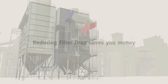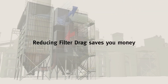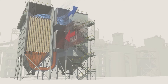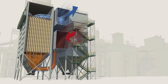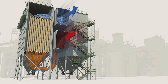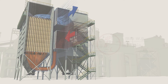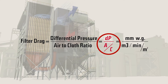Filter drag — reducing it saves you money. By definition, it is the total resistance to the airflow in your bag house, caused by the combination of the filter media and the dust on or in the filter media. The higher the resistance, the more energy consumed to move the air through the bag house. This formula breaks it down: filter drag equals differential pressure divided by air-to-cloth ratio.